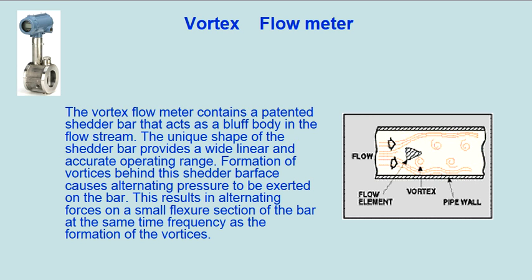The Vortex Flow Meter contains a patented shedder bar that acts as a bluff body in the flow stream. The unique shape of the shedder bar provides a wide linear and accurate operating range. Formation of vortices behind this shedder bar causes alternating pressure to be exerted on the bar, resulting in alternating forces on a small flexure section of the bar at the same frequency as the formation of the vortices.